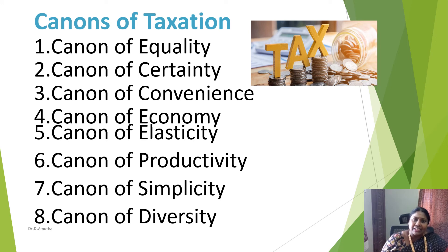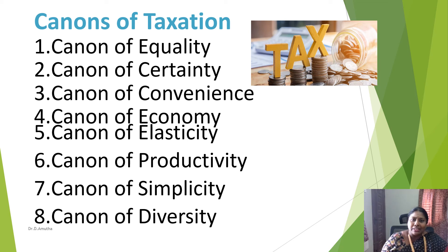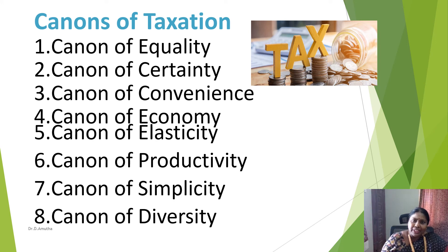Canon of certainty: taxation must be certain. The tax that each individual must pay should be predictable and not arbitrary. The time and manner of payment as well as the amount to be paid should be clear and definite to the contributor and to anyone else. There must be certainty regarding such issues: who will bear the tax, the duration and amount of tax, and how the tax must be collected.